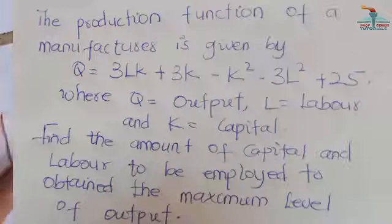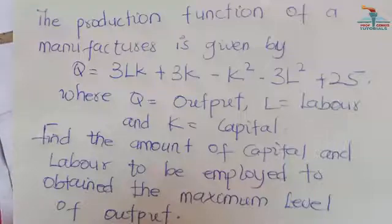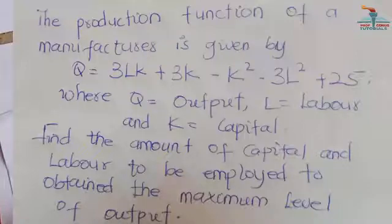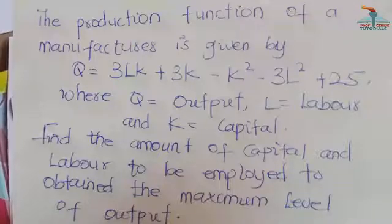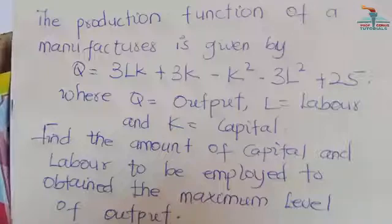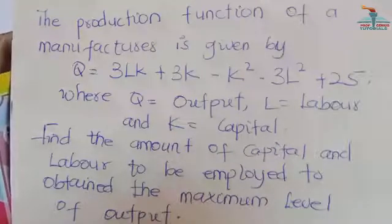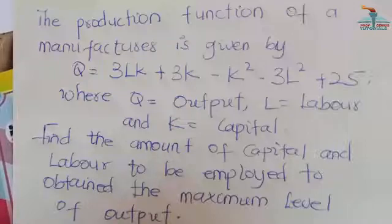So we have this question. The production function of a manufacturer is given by 3LK plus 3K minus K squared minus 3L squared plus 25, where L is labor and K is capital. We have to find the amount of capital and labor to be employed to obtain the maximum level of output.